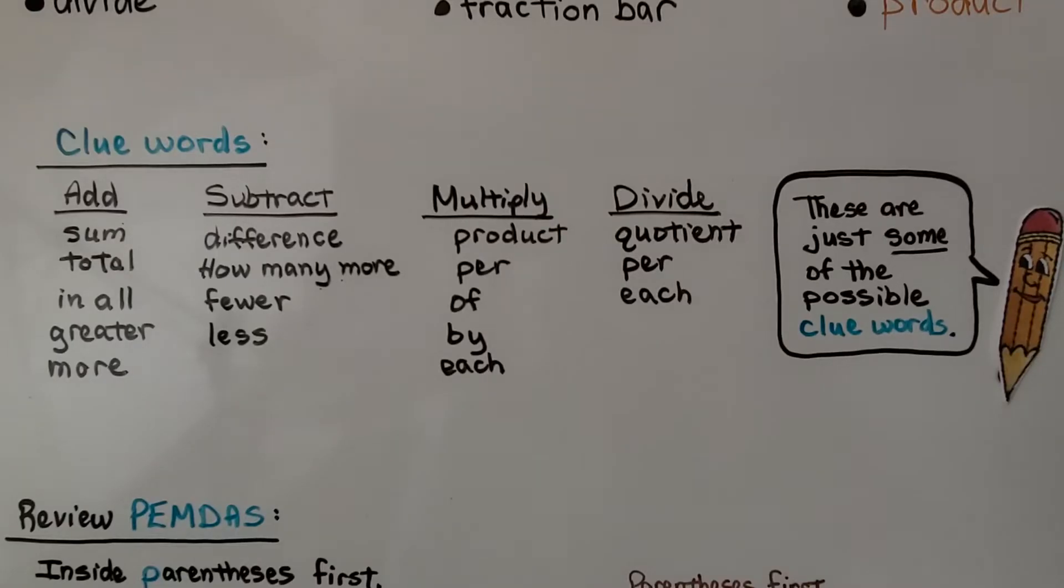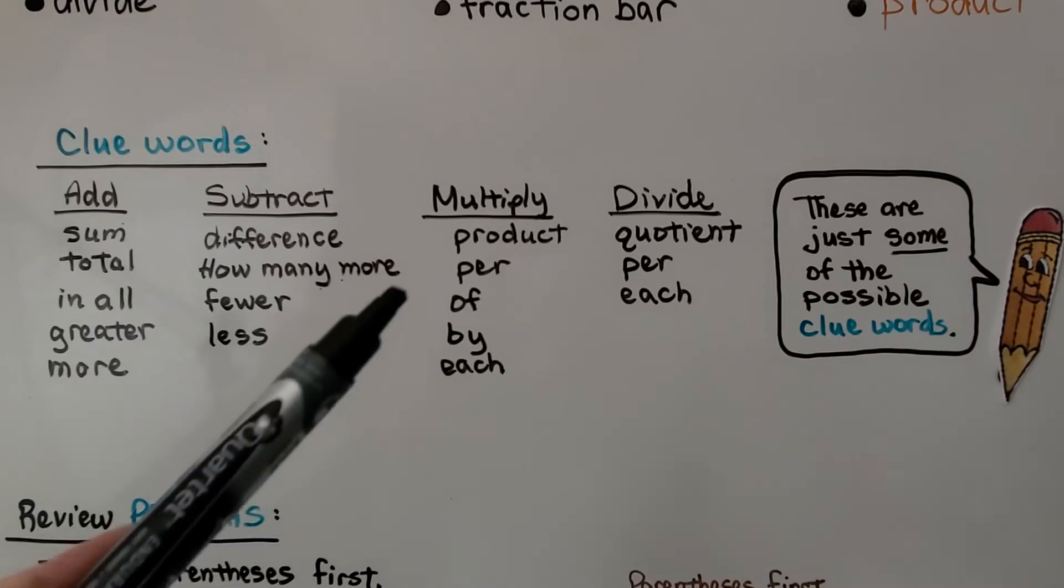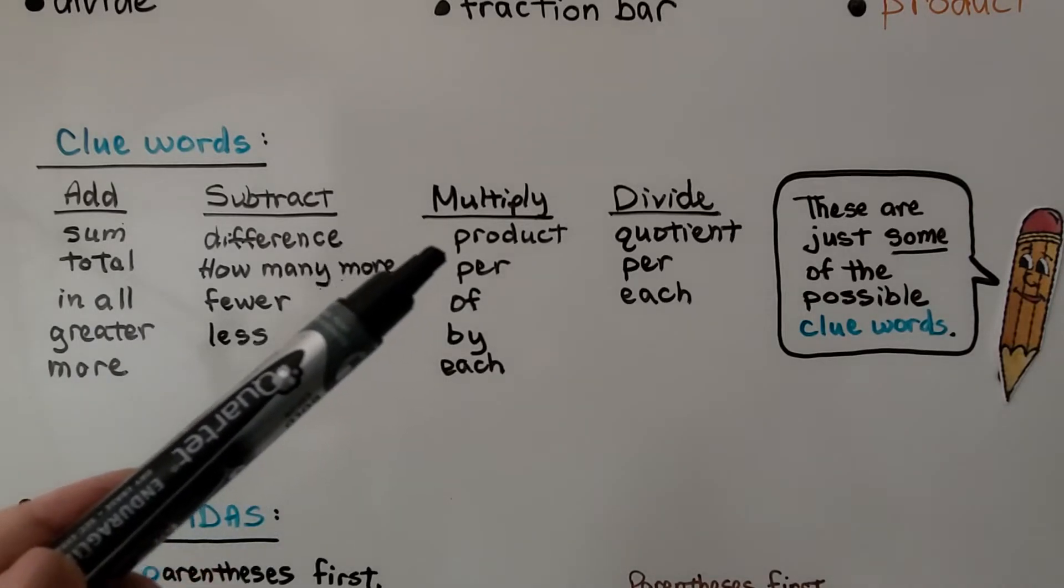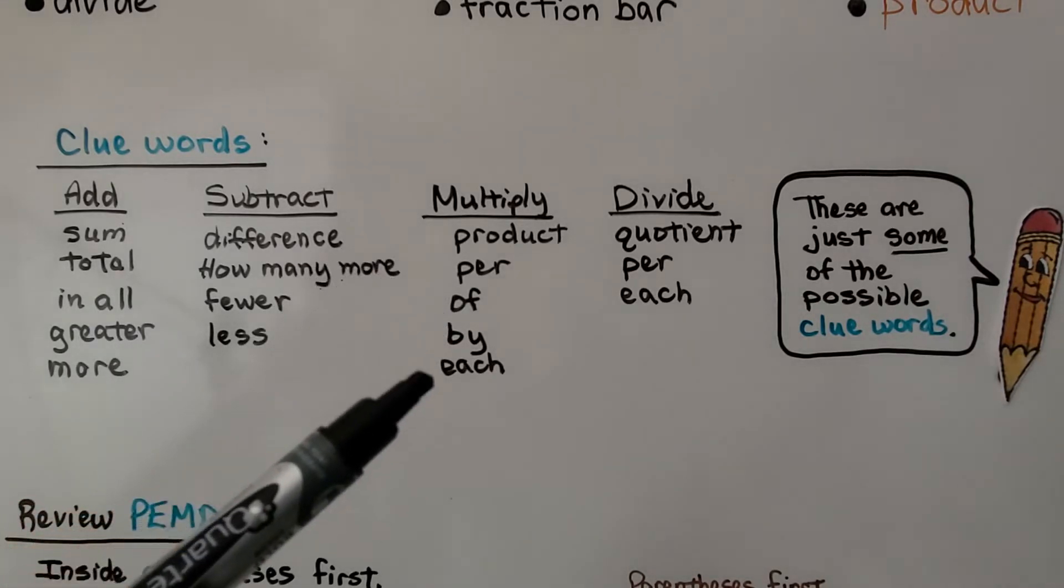So, to quickly cover some of the clue words. For addition, you might see the words sum, total, in all, greater, or more. For subtraction, you might see difference, how many more, fewer, less. To multiply, you might see product, per, of, by, each.